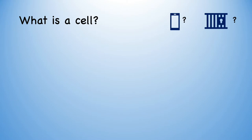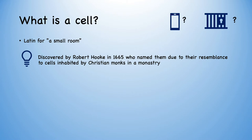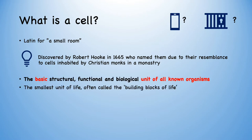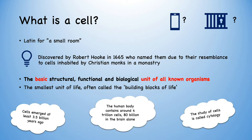So what is a cell? Cell is Latin for a small room. They were discovered by Robert Hooke in 1665, who named them due to their resemblance to cells inhabited by Christian monks in a monastery. In biology terms, they're the basic structural, functional and biological unit of all known organisms. They're the smallest unit of life, so often called the building blocks of life.